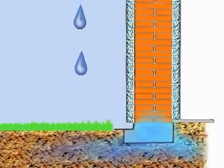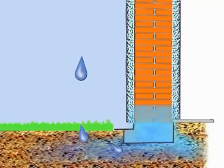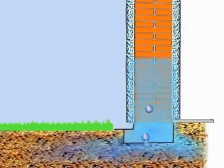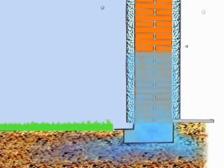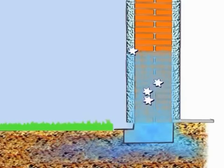Moisture penetrates the ground due to precipitation, dew or groundwater. It then enters the foundation of masonry, where it rises and evaporates, mainly in higher portions of the wall. The greater the quantity of moisture, the larger is the amount of evaporation at the evaporation zone. As a result, salts that damage the basic structure of a building enter the masonry from the ground.